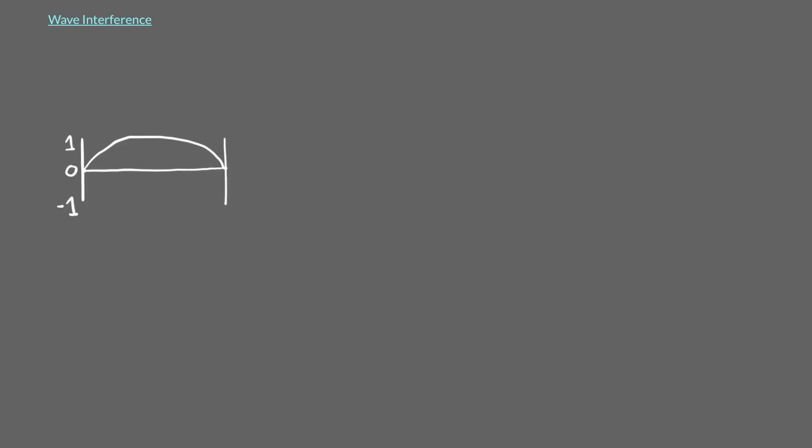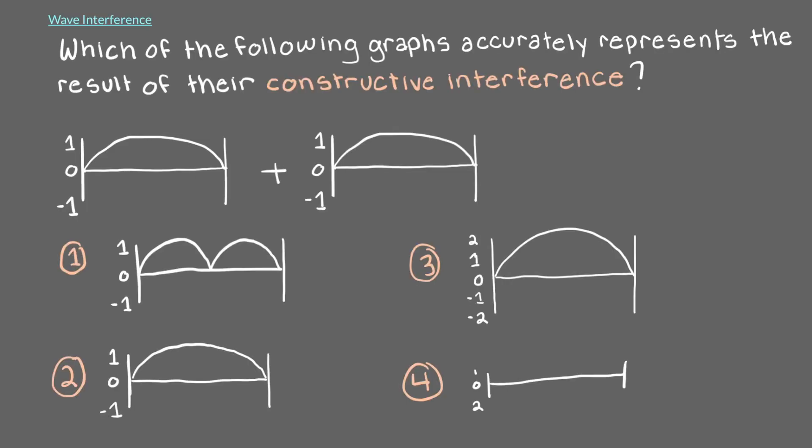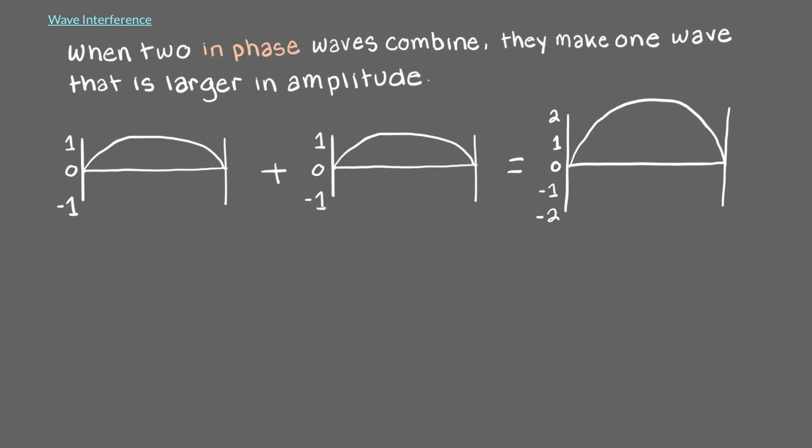Let's imagine that we have this wave and we combine in phase with another identical wave. Which of the following graphs accurately represents the result of their constructive interference? That's right, when two in-phase waves combine, they make one wave that is larger in amplitude.